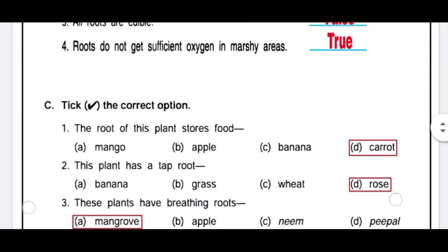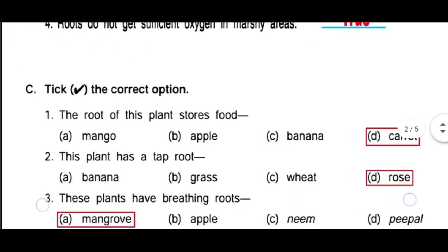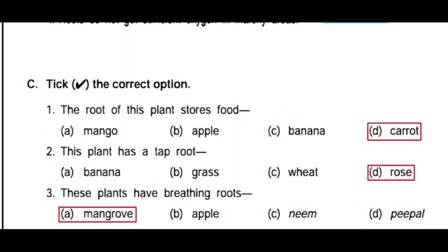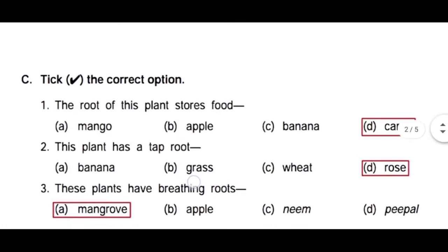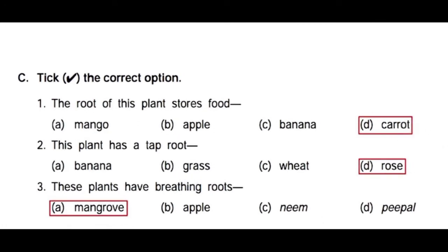Now tick the correct option. First is: The roots of this plant store food - Mango, Apple, Banana and Carrot. The answer is Carrot.